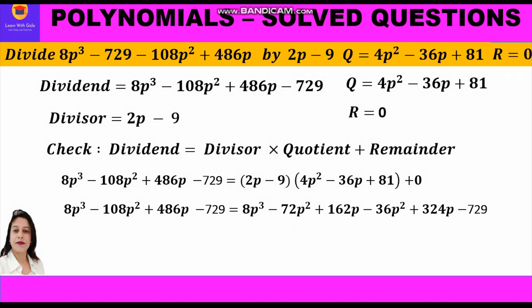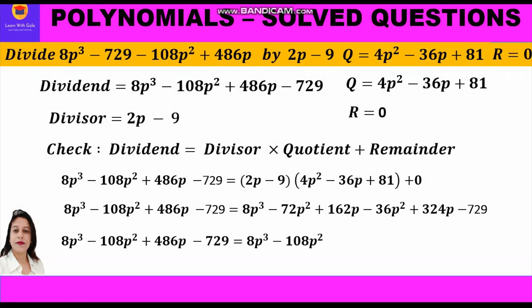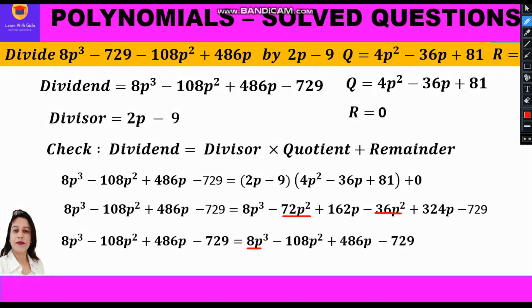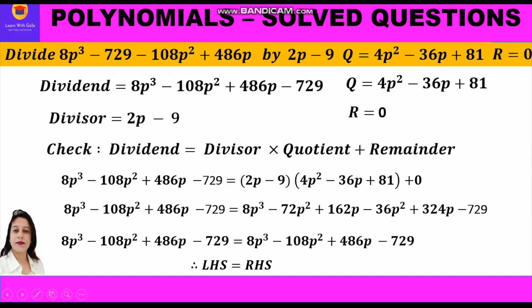Collecting like terms: 8p³, then −72p² − 36p² = −108p², then 162p + 324p = 486p, then −729. This gives 8p³ − 108p² + 486p − 729, which is exactly equal to the left-hand side. Our answer is correct; the division algorithm is satisfied.